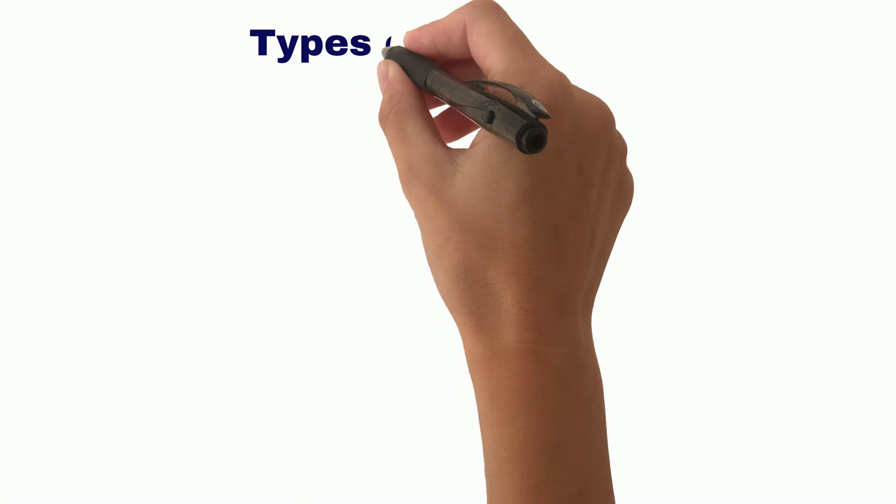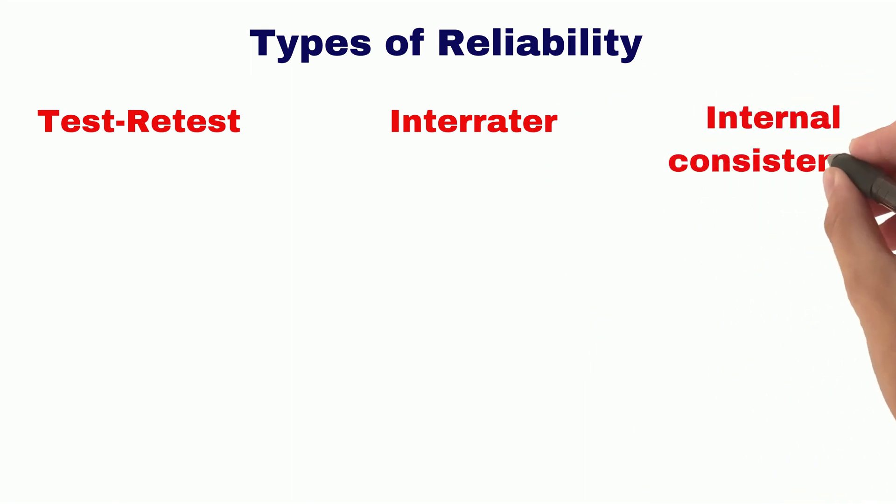There are different types of reliability measures: test-retest, iterator, and internal consistency.